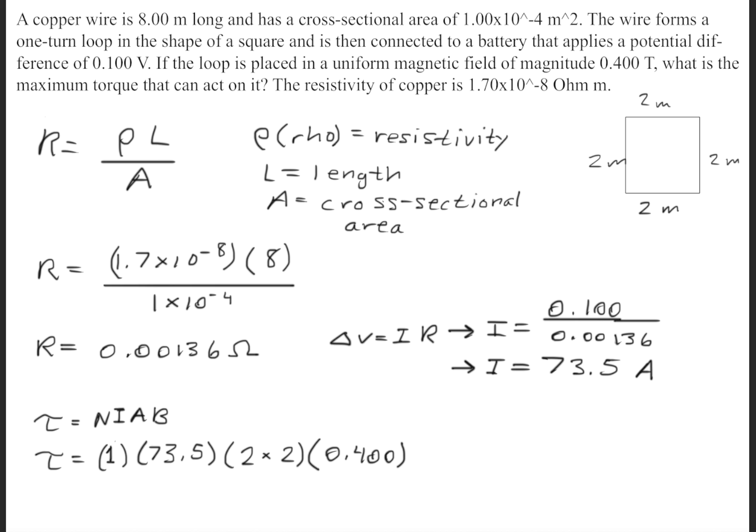So when we plug in the values, the number of turns is simply 1, the current we calculated to be 73.5 amps, and the area will be 2 meters times 2 meters because it's the square right above, and the magnetic field is 0.4 tesla. This results in a torque of 117.6 newton meters.